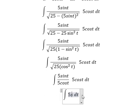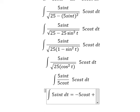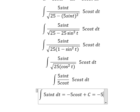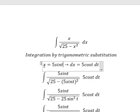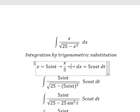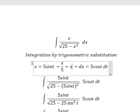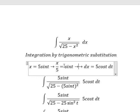The integral of sine t gives us negative 5 cosine t plus C. To find t, we divide both sides by 5 and get t equals arcsine of x over 5.